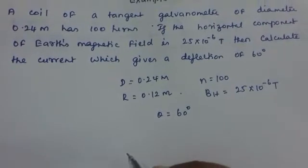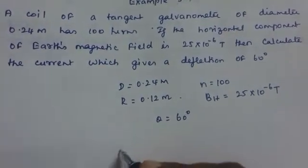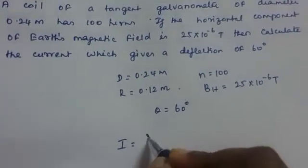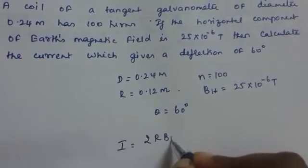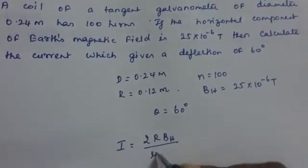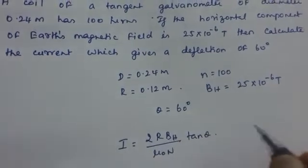Now what you have to find out is the current. The formula here is 2r Bh by mu 0 n into tan theta.